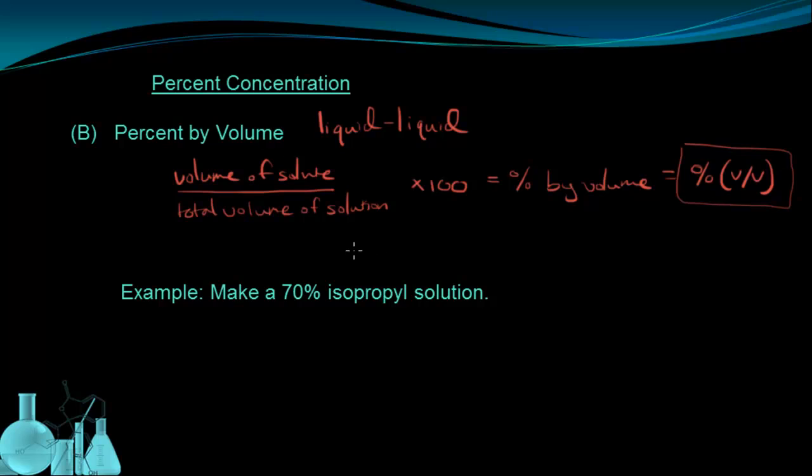Unlike percent by mass, percent by volume is not strictly temperature independent, because different liquids can expand at different rates based on temperature. But frequently, when you have liquids dissolved in liquids, you're dealing with substances that expand at pretty much the same rate. So you don't have to worry too much about the concentration changing in a percent by volume sense when the temperature changes.